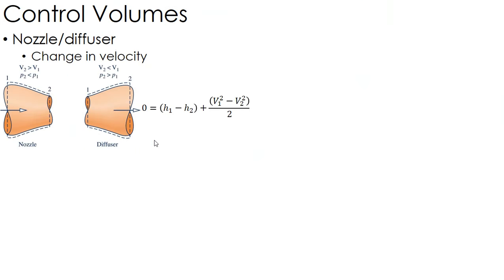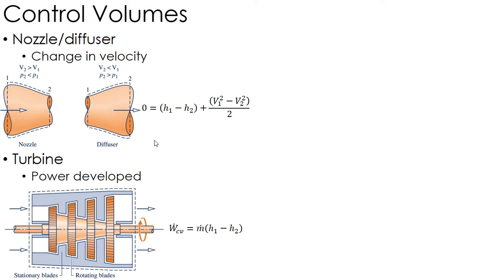The first device is a nozzle or diffuser. A nozzle increases velocity; a diffuser decreases velocity. There's no work and no heat loss or gain from the surroundings — all that's happening is a change in kinetic energy. So knowing the properties on both sides, you calculate the enthalpy, and that change in enthalpy essentially equals the change in kinetic energy: Δh = Δke = v²/2. For most other devices, ke is ignored just as pe is ignored.